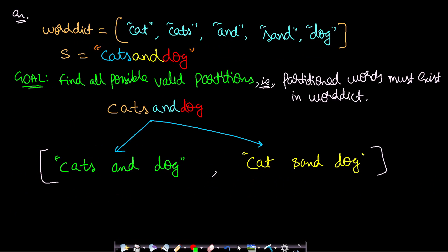Let's see an example. We are given a word dictionary with five words: cat, cats, and, sand, and dog. Our string s is 'catsanddog' and we are required to find all possible valid partitions. A valid partition means we segment the string into words, insert spaces between them, and each segmented word must be present in the word dictionary. So this forms a valid sentence created by segmentation of the entire string.